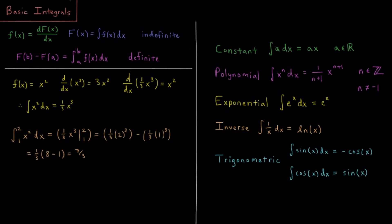This video will review the basic integrals of some common functions that we encounter. From the previous video, we defined that we had some function f of x, which is equal to the derivative of another function, big F of x. Big F of x in the indefinite case is equal to the integral of f of x, ignoring the constant of integration and setting that equal to zero. The definite integral from a to b of f of x would be big F of b minus big F of a.